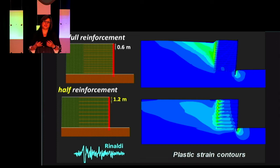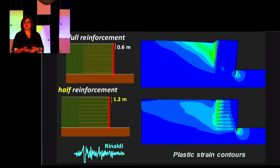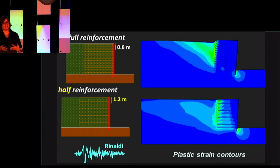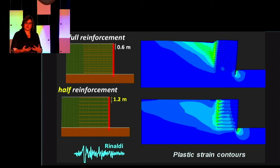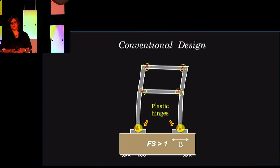We tried to take it further and asked: this MSE wall has reinforcement every 60 centimeters — maybe we can save money and space it at 1.2 meters. We looked numerically at how it behaves and found it is a very redundant system because it can shed the load within the reinforcement and also below the wall. But if you try to stretch it too much, it doesn't behave well. Redundancy and robustness — key elements of a resilient system — were proven both numerically and through experiments.